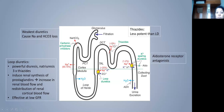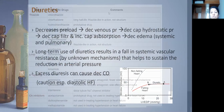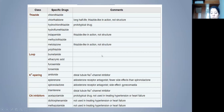Diuretics decrease preload and venous pressure, reducing capillary filtration and thereby reducing systemic and pulmonary edema. Long-term use actually decreases systemic vascular resistance by unknown mechanisms. However, excessive diuresis can decrease cardiac output — especially when there is a filling restriction. On the Frank-Starling curve, diuretics markedly decrease LV end-diastolic pressure without significantly changing stroke volume.